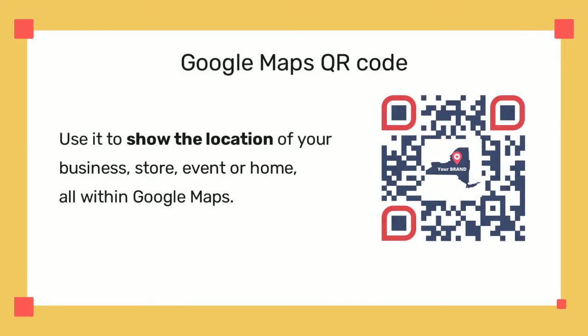Where would any of us be without Google Maps, right? Not only can we see an aerial view of the place we need to go to, but we can also get directions and know how long it takes to get there, depending on our means of transportation. With a Google Maps QR code you can get all that information with a simple scan.